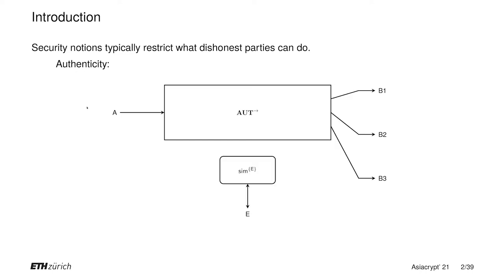Authenticity is captured by an authenticated channel, to which Alice can write and from which each of these Bobs can read. Eve, who is a dishonest party, interacts with a simulator. Since we want to capture authenticity, this simulator can only read from this authenticated channel. This authenticated channel essentially captures a guarantee that if one of these Bobs reads a message, then Alice wrote it.